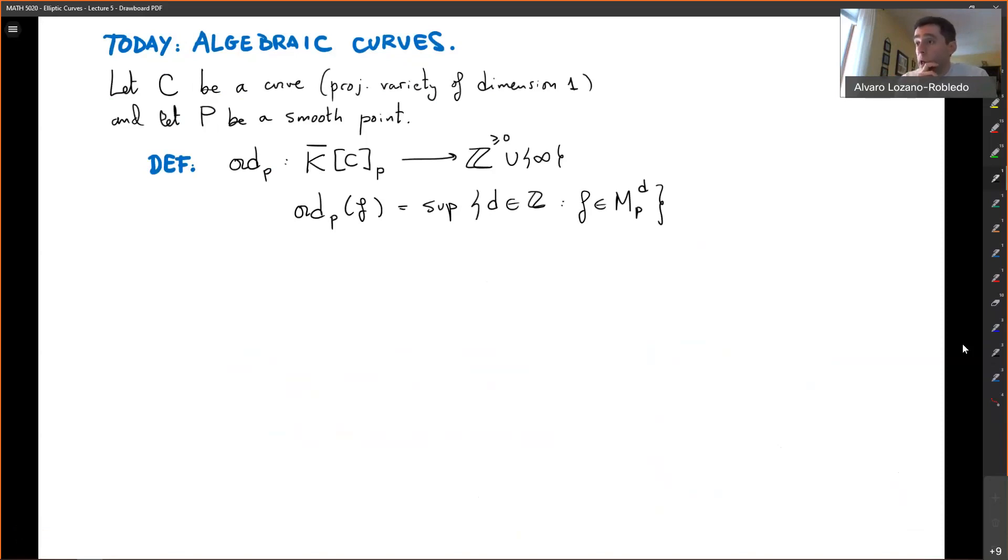And we define it to be the order at P of a function f to be the supremum of integers d such that f is in the dth power of the maximal ideal. So m_P being the functions in the local ring that vanish at P. And then we can extend it to fractions, like this by the order at P of f minus the order at P of g. So extend by this to all of k(C) to the entire function field.